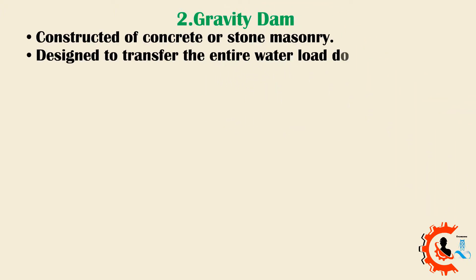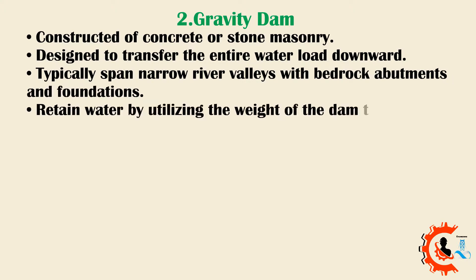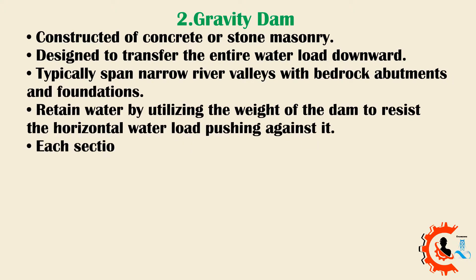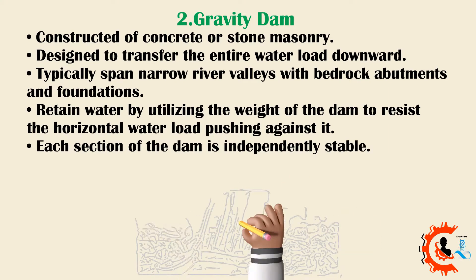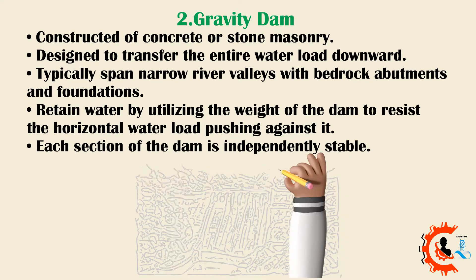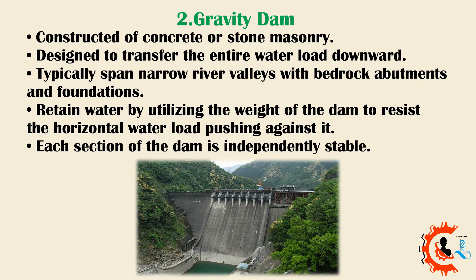2. Gravity dam. Constructed of concrete or stone masonry. Designed to transfer the entire water load downward. Typically span narrow river valleys with bedrock abutments and foundations. Retain water by utilizing the weight of the dam to resist the horizontal water load pushing against it. Each section of the dam is independently stable.